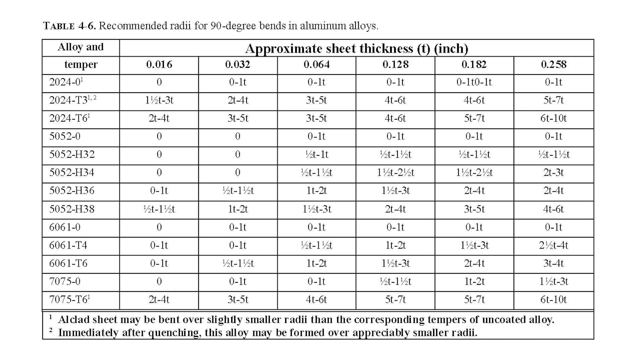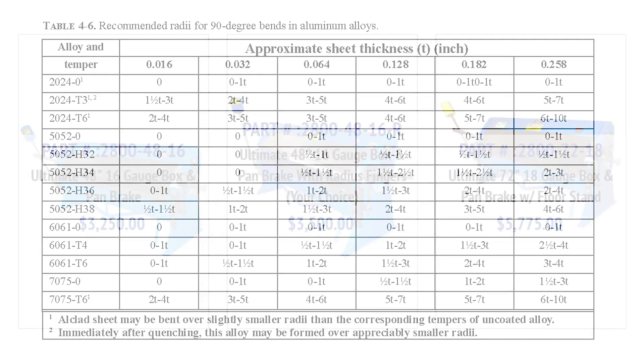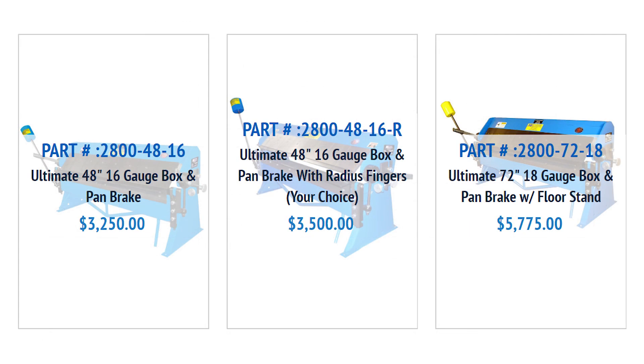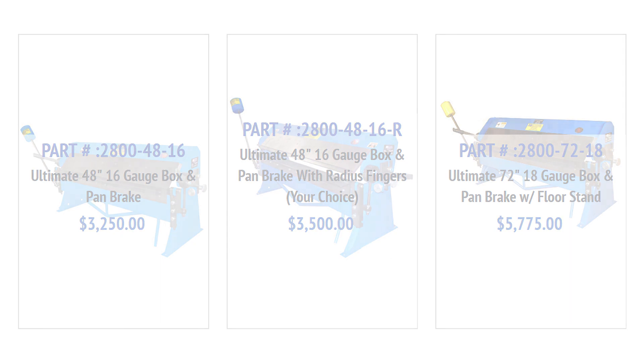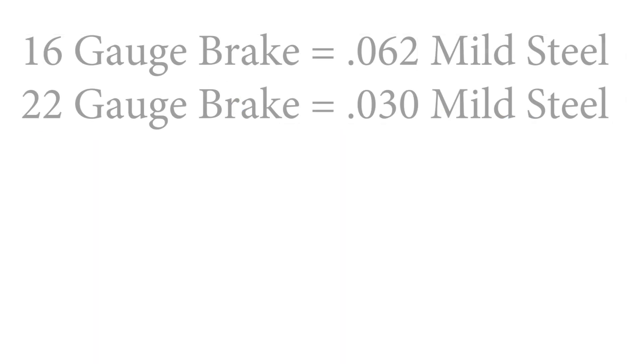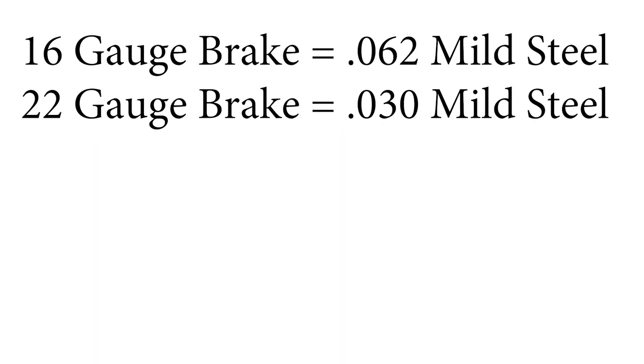As the sheet metal gets thicker, the amount of force required increases substantially. Normally the brake is rated for the maximum gauge material that the machine is capable of bending. This requires that you select a brake compatible with the thickness of the material that you will be bending.